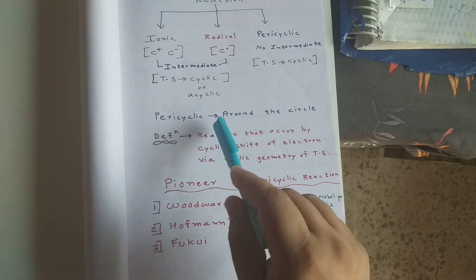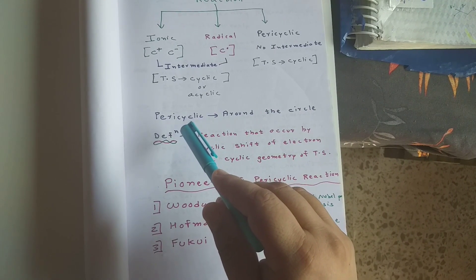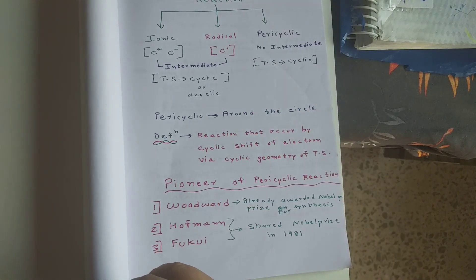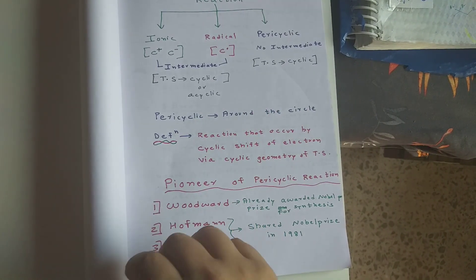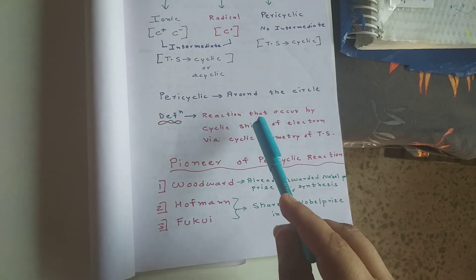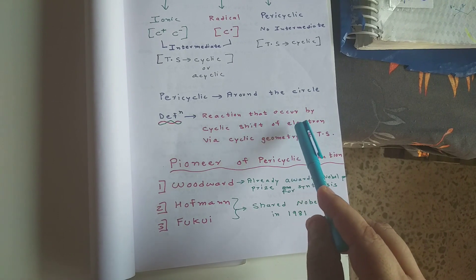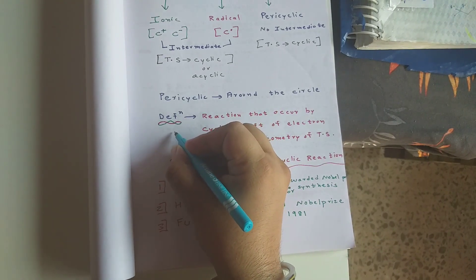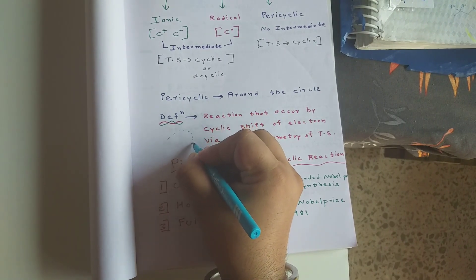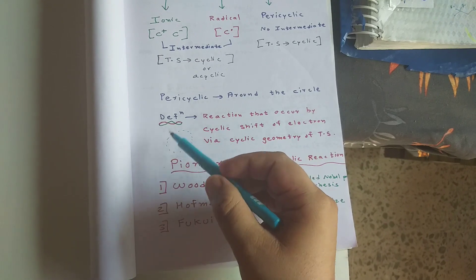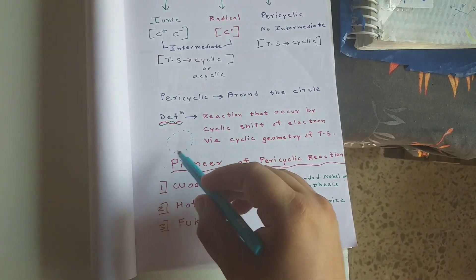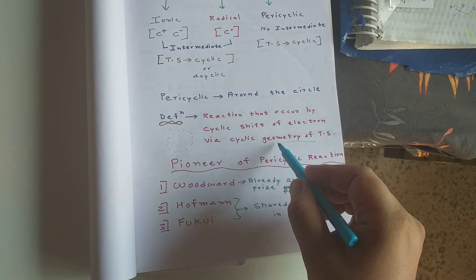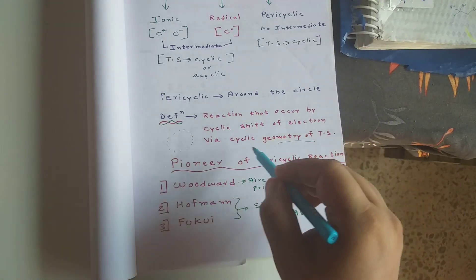What does 'pericyclic' mean? If you Google it, 'pericyclic' means 'around the circle.' For organic chemistry purposes, the definition is: a reaction that occurs by a cyclic shift of electrons via a cyclic geometry of the transition state. In any pericyclic reaction, you get a cyclic transition state, and the electrons move in a cyclic loop.